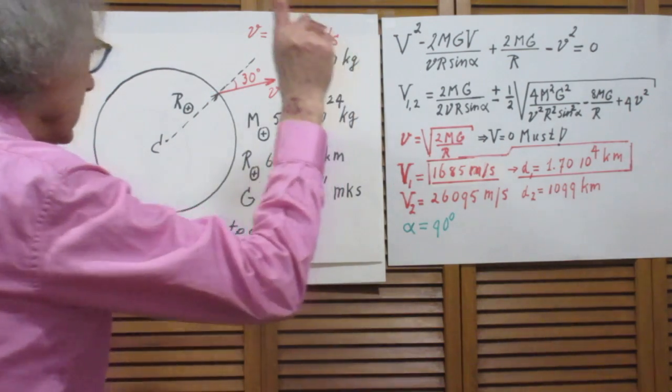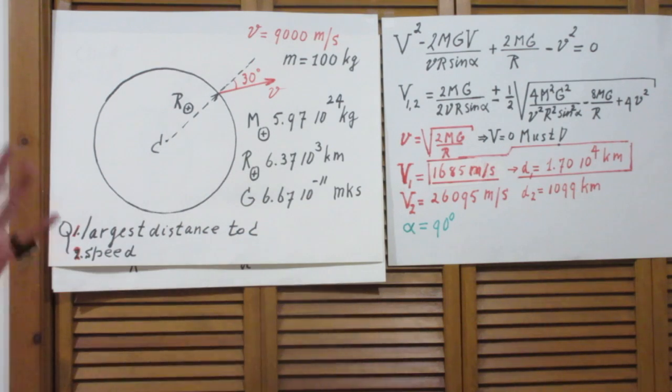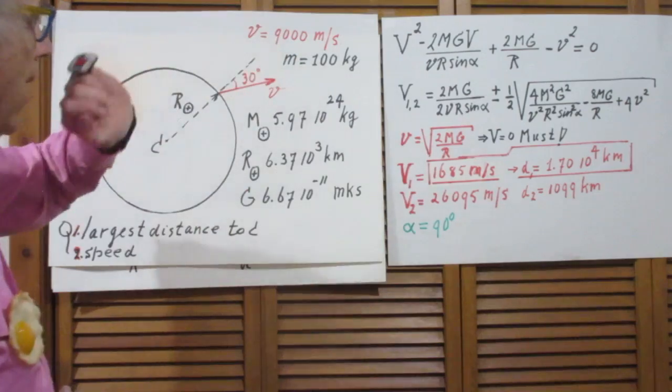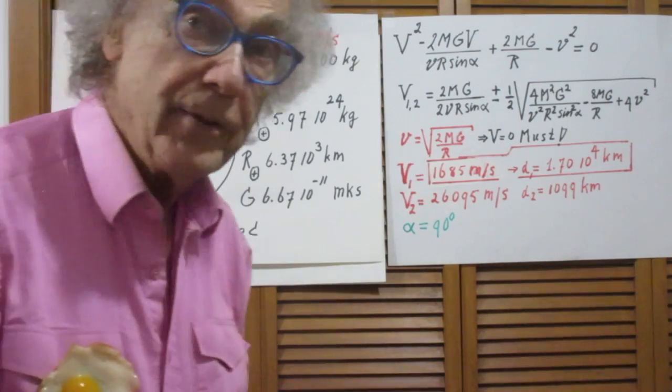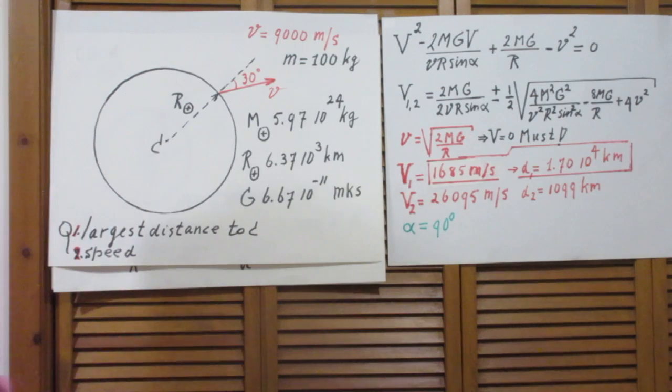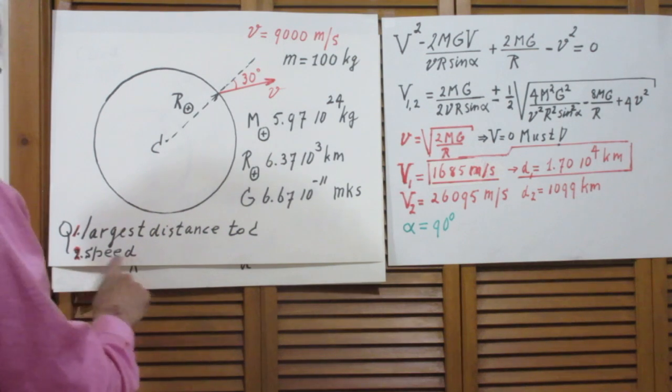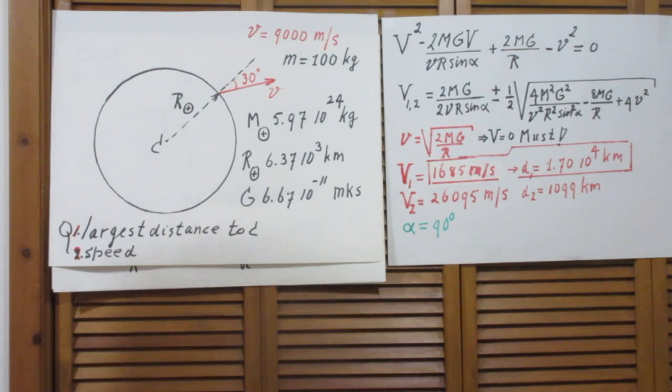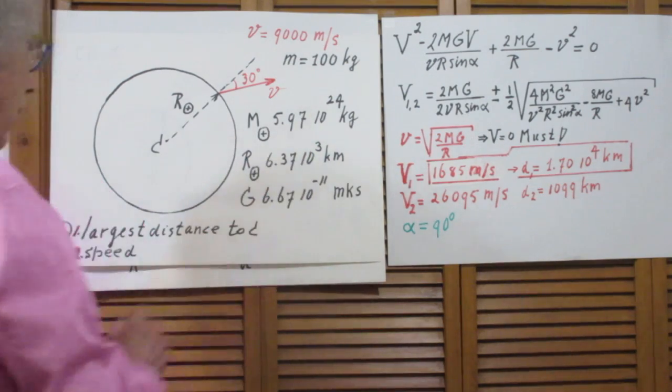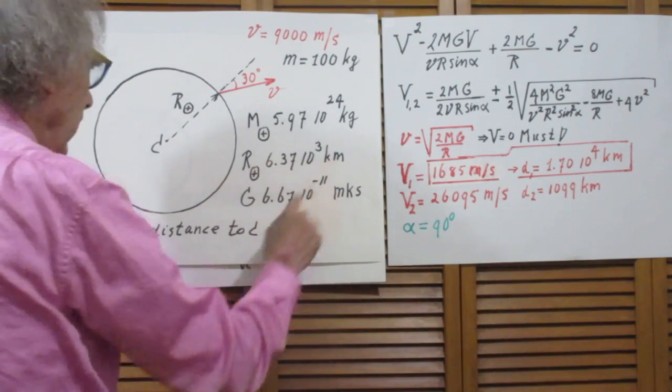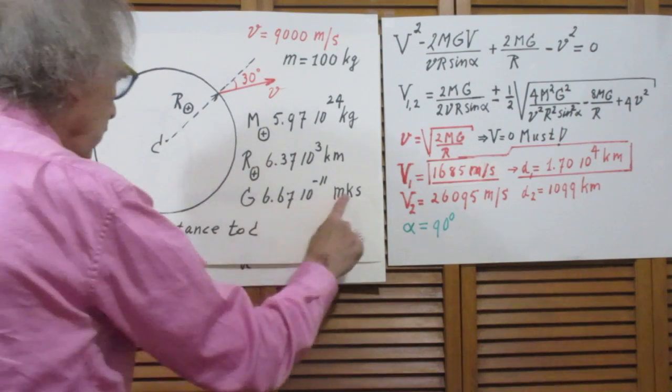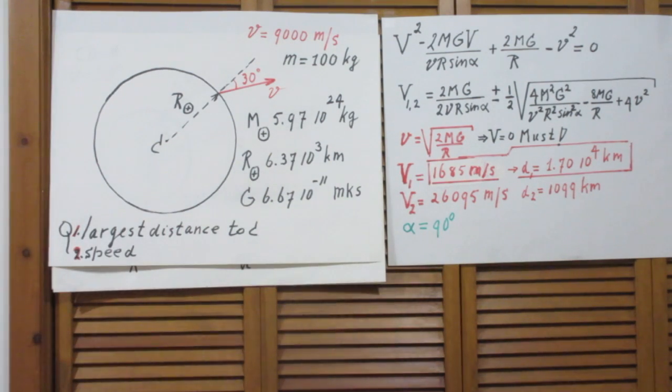The object will not escape the Earth's gravity because that number 9000 is not high enough, so it will go into an elliptical orbit. I want to know what is the largest distance to C, and what is then the speed when it reaches that largest distance. We will use this for the mass of the Earth, this for the radius of the Earth, and this for gravitational constant.